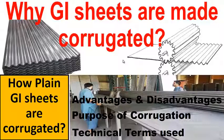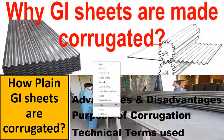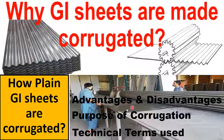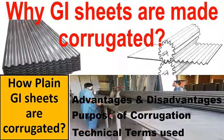Hello guys, I am engineer Ramadad Nar Khan and you are watching my YouTube channel Being Engineer. In this video, we will try to find the answer to these questions which are very common: why GI sheets are made corrugated. We will also try to find out the advantages and disadvantages of corrugation of galvanized iron sheets, the purpose of corrugation, and technical terms used in corrugated sheets. In the end of the video, I will show you a video of a factory in which plain GI sheets get corrugated. So please watch the complete video. Let's get started.